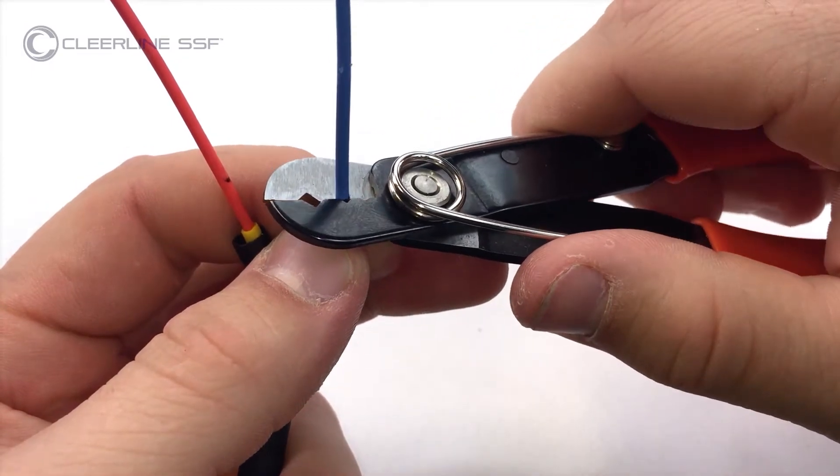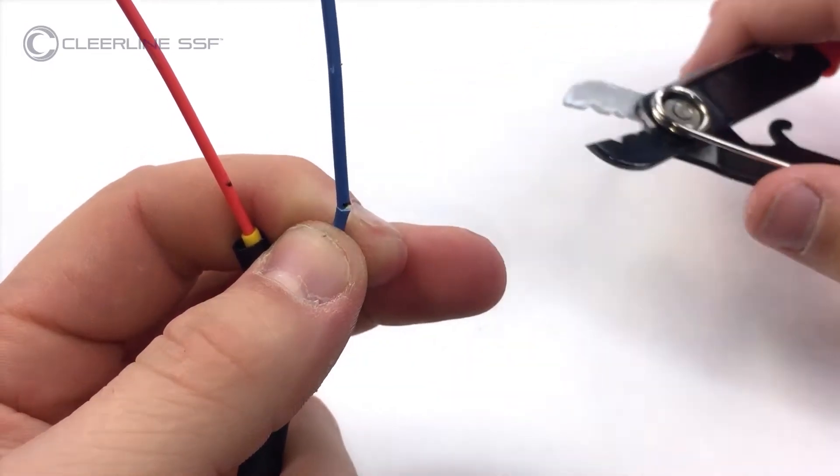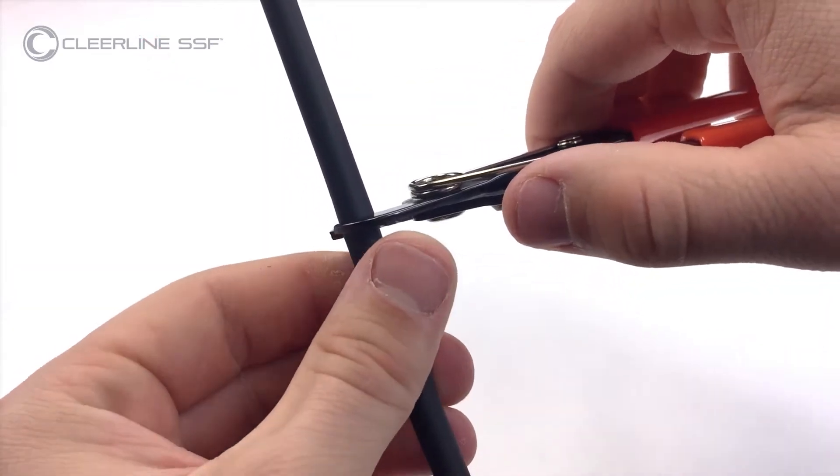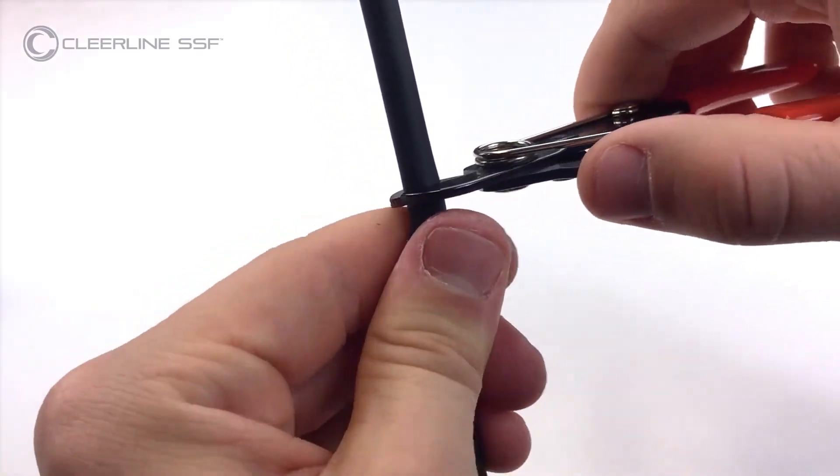Remove the outer jacketing from our smaller diameter cables using the included fiber strippers. Just don't use them directly on the optical fiber.